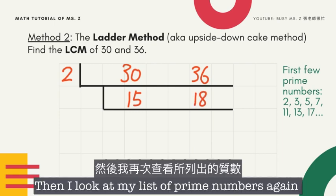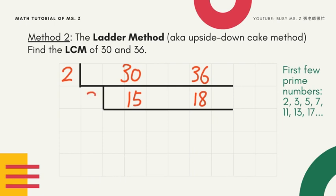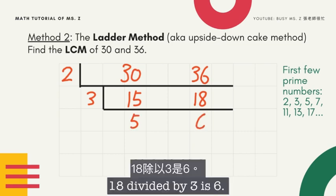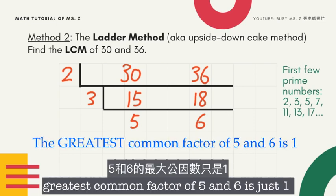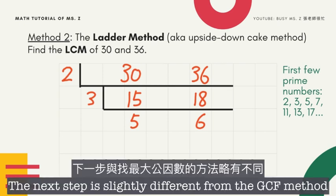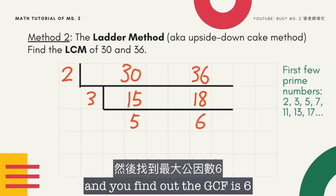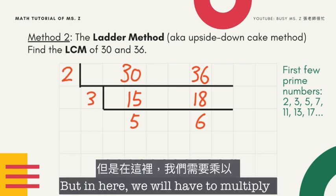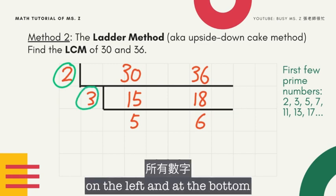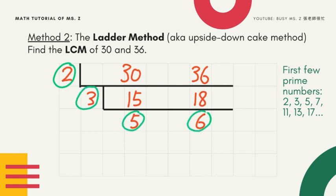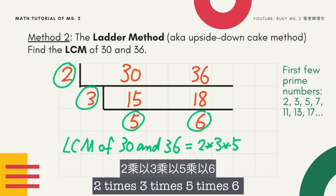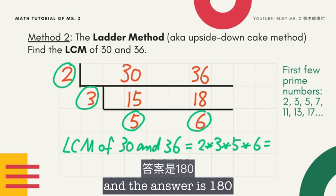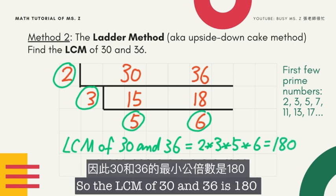Then I look at my list of prime numbers again. This time we cannot use 2, so we move on to 3. 15 divided by 3 is 5, and 18 divided by 3 is 6. We stop here because the common factor of 5 and 6 is just 1. In the LCM method, we multiply all the numbers on the left and at the bottom. So the LCM of 30 and 36 equals 2 times 3 times 5 times 6, which is 180.